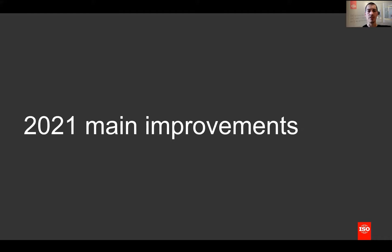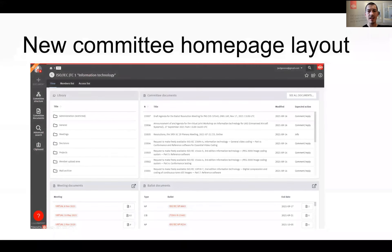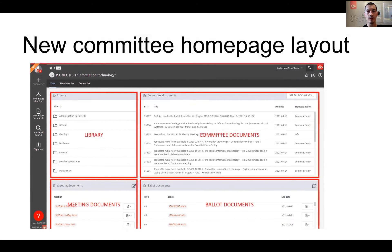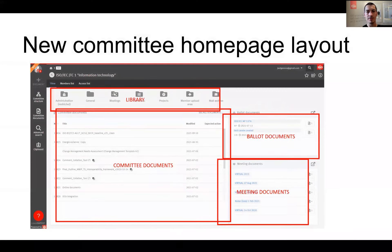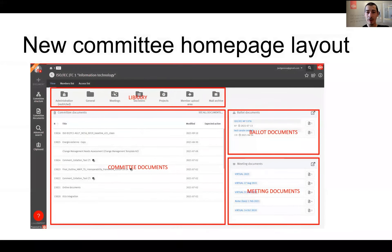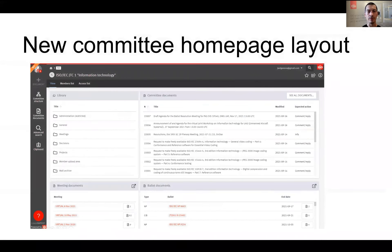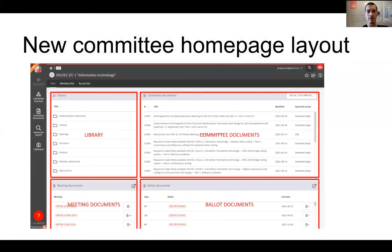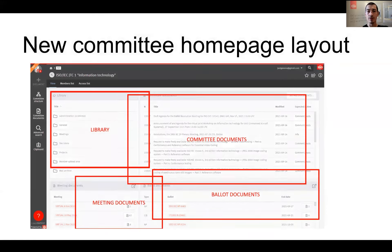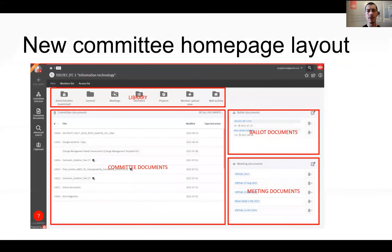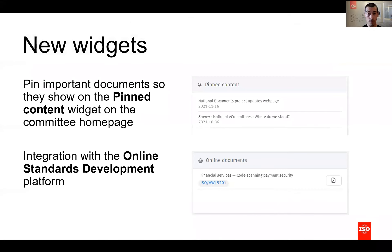Now let's talk about concrete features introduced this year. First of all, let's have a look at the new committee homepage. The new look and feel brings better visibility to what matters the most in ISO documents — committee documents. The previous content is still there to be found. We just changed the widgets' positions and sizes to bring better visibility to the latest documents.